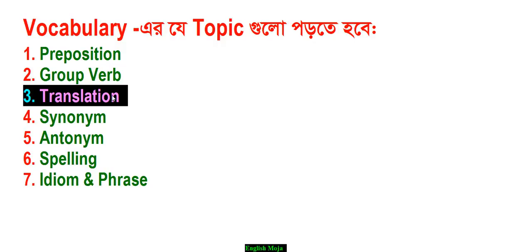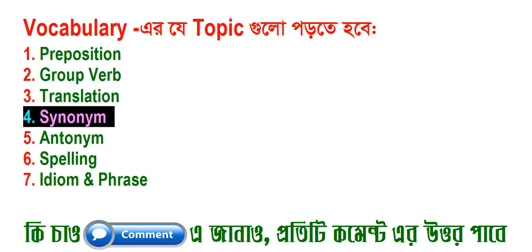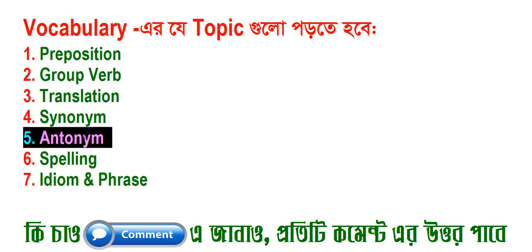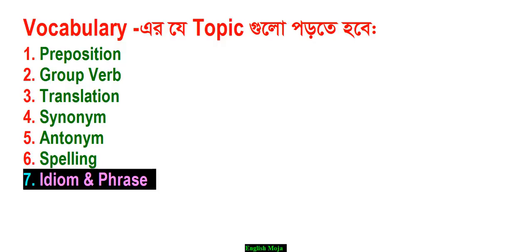Number three is translation — English to Bengali and Bengali to English. Number four is synonym. Number five is antonym. Number six is spelling — you need to know the correct spelling.